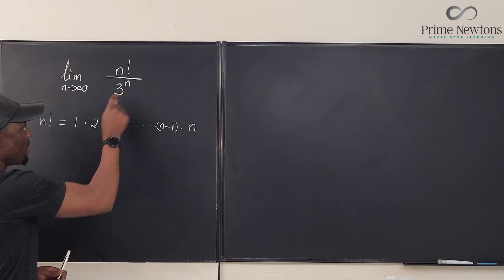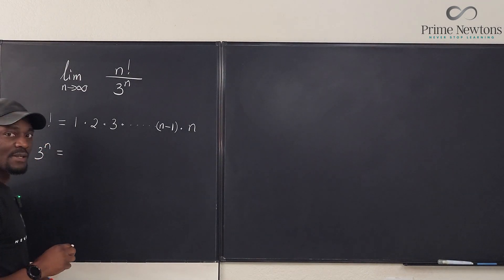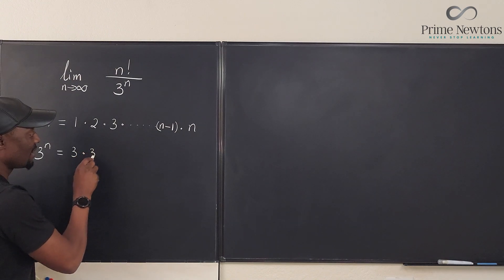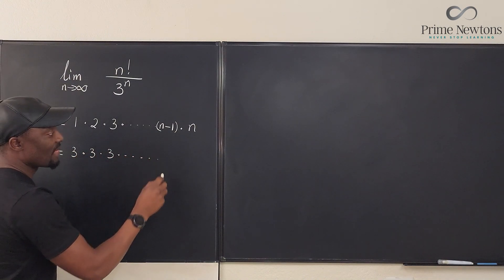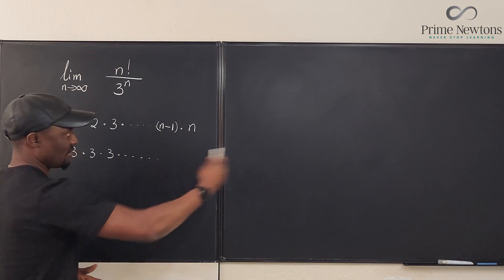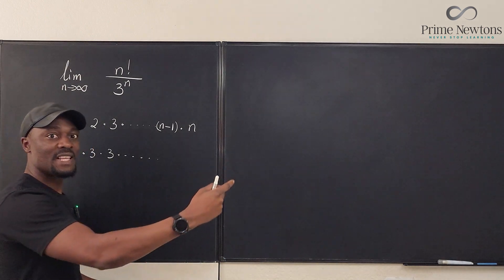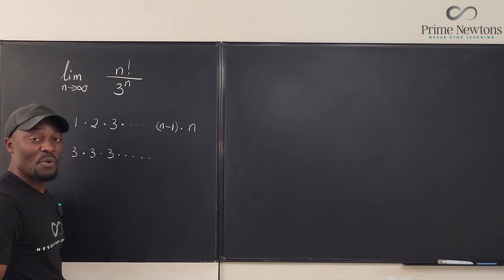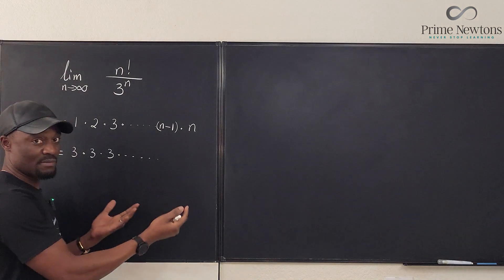Now, what about this? We know that 3 to the n is equal to 3 times 3 times 3 times... well, we don't know how many. It just keeps going. There is no ending. It depends on how many 3s we need depending on what n is. But whatever happens, we're going to have the same number of terms.